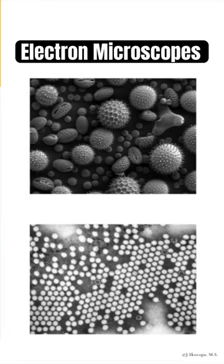There are two basic types of electron microscopes, or EMs, that help us study subcellular structures — structures that are smaller than and within the cell. They are scanning electron microscopes and transmission electron microscopes.